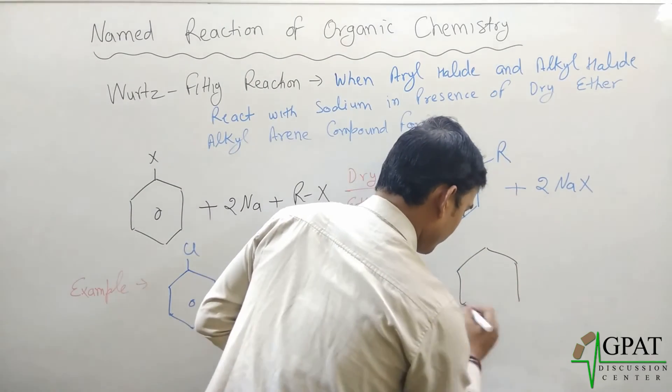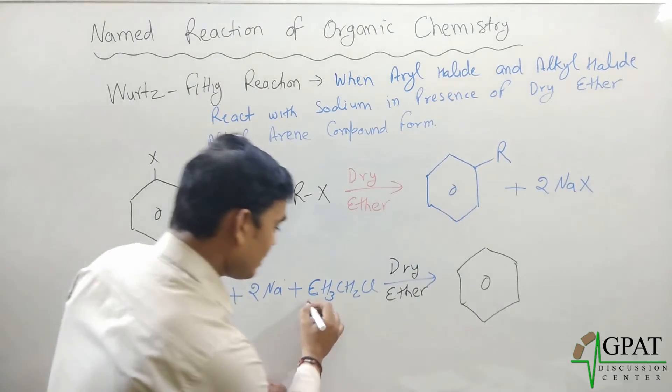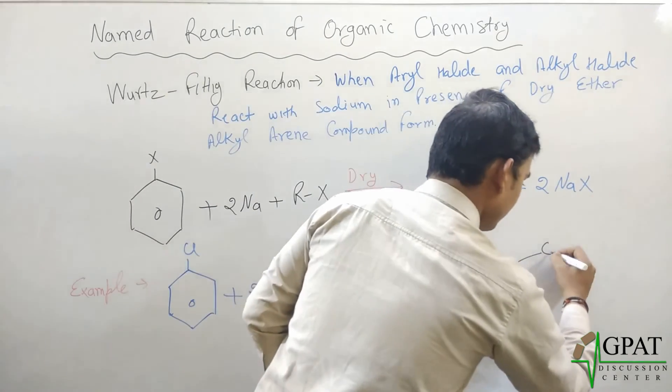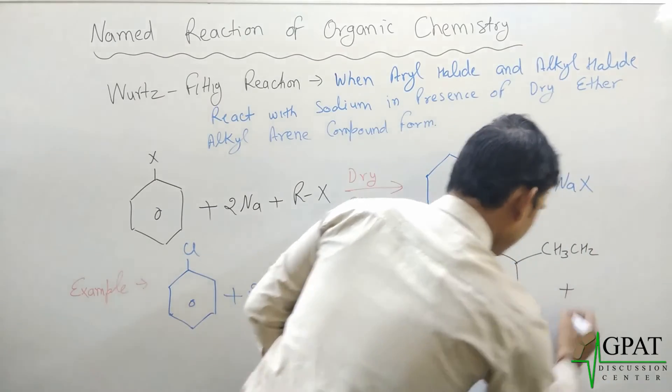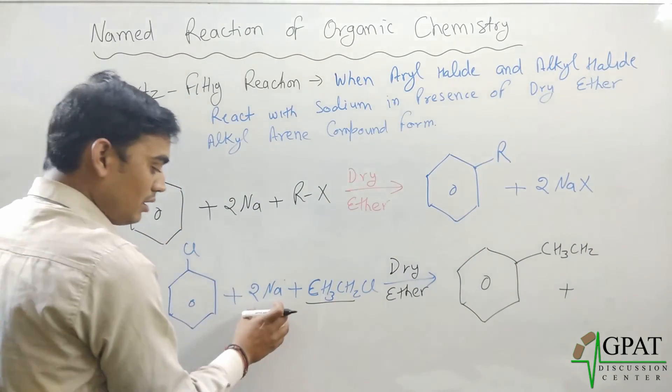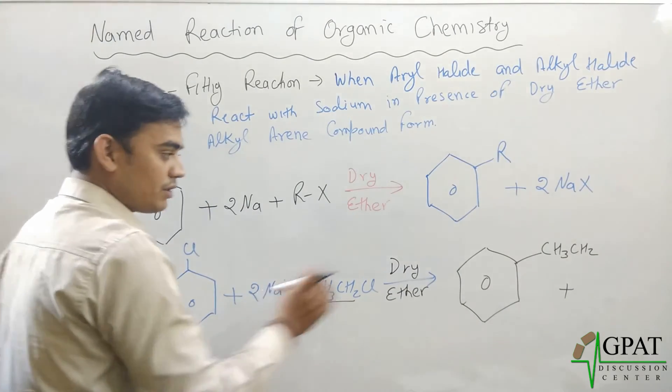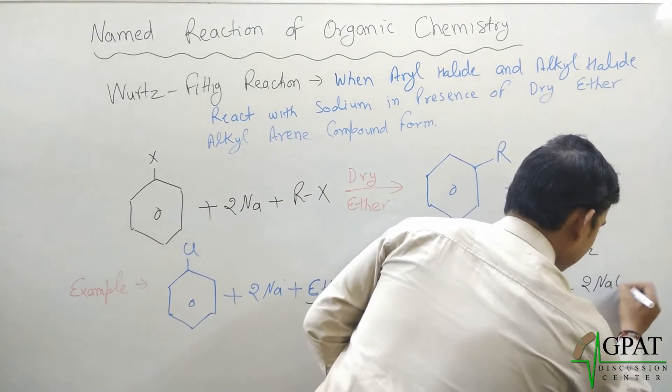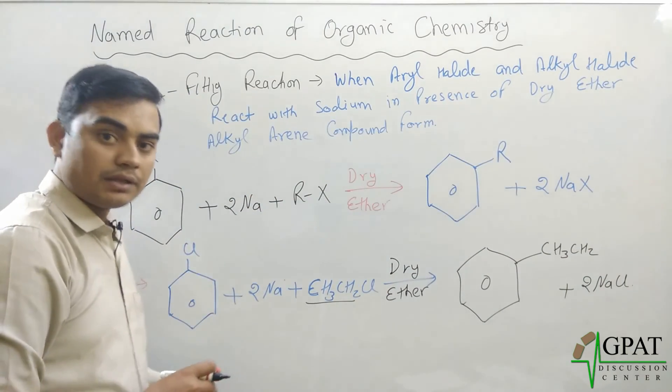this is our benzene. And with the benzene, this alkyl group will be added here, means CH3, CH2 plus here, this chloride and this chloride molecule will come and form sodium chloride with the sodium and byproduct will be 2 NaCl. This is the Wurtz-Fitting reaction. Thank you.